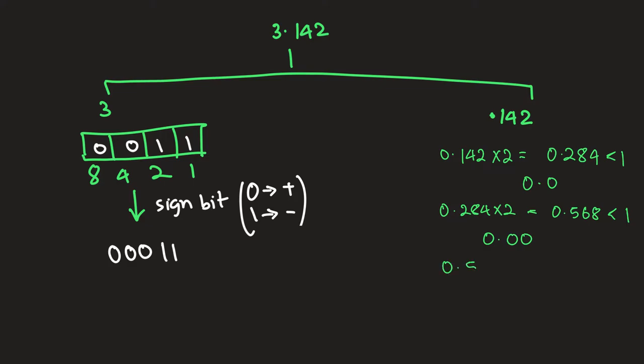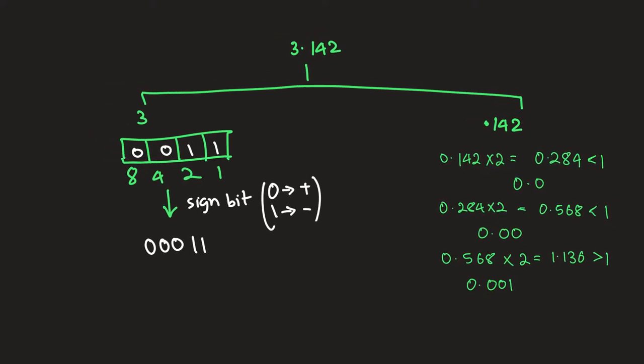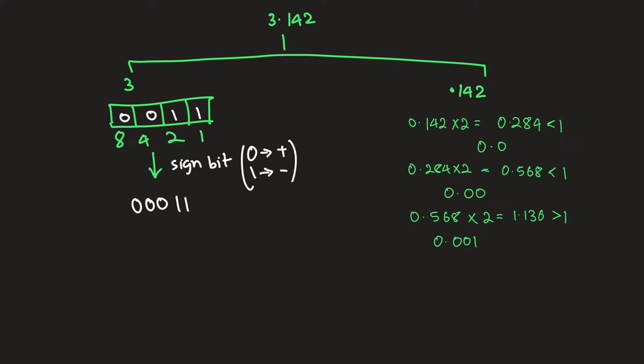Now when we multiply 0.568 times 2 we'd have 1.136. This value is greater than one so let's add a one over here. We're gonna go a little bit further when solving this because we have a 10 bit mantissa.